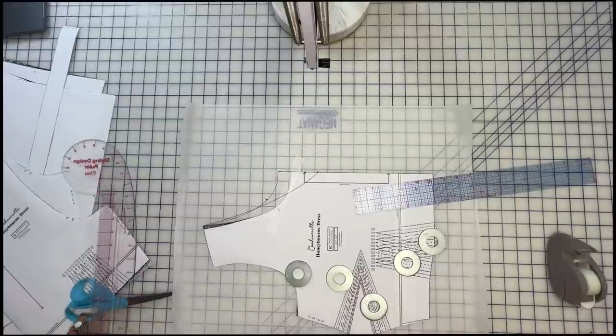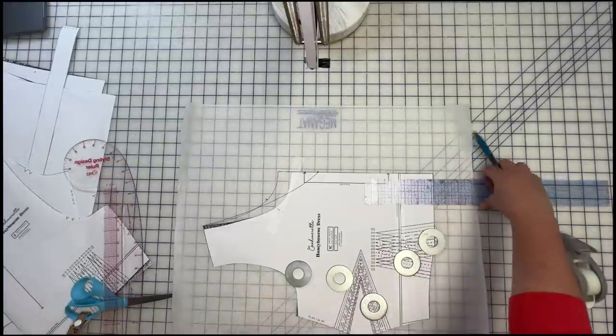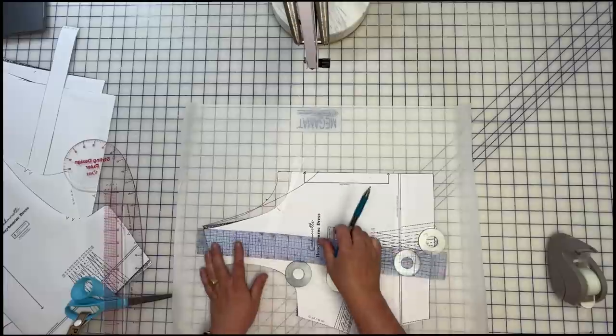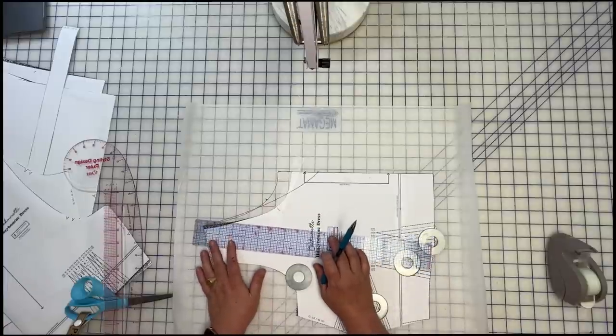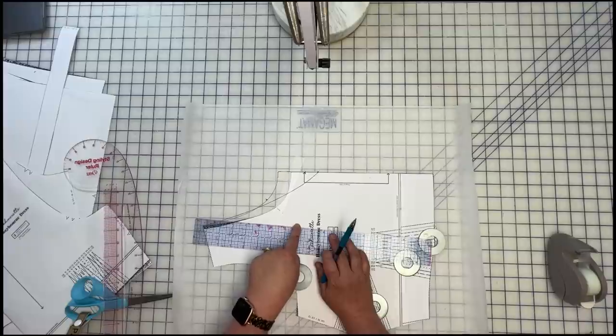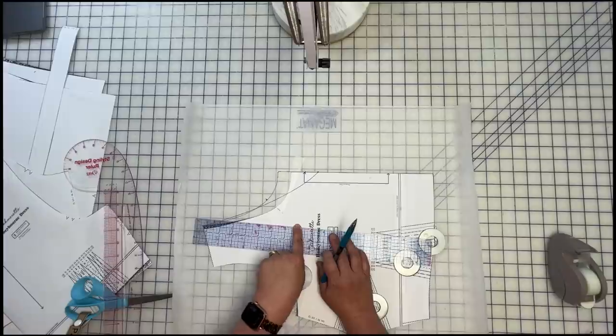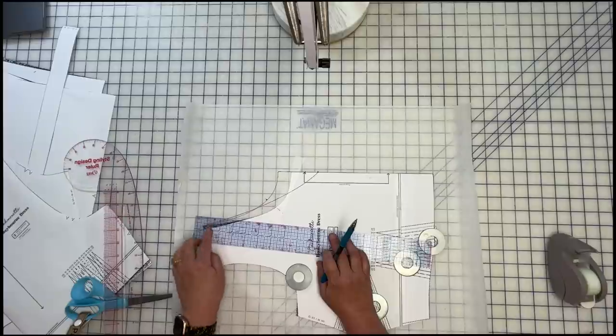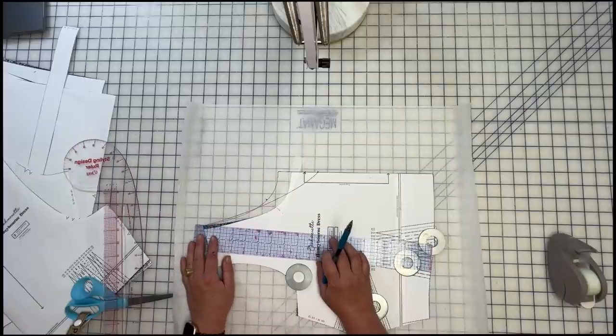Now the way we would do a square neckline. Now this is my preference. I really like when the point of the square neckline is out just a little further than the shoulder point. So it kind of comes back in towards your neck. I just think that that's really pretty, not a lot, but a little bit. So I'm not going straight down.